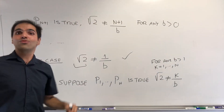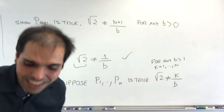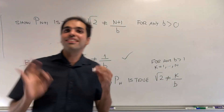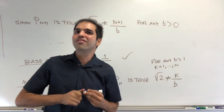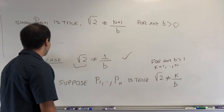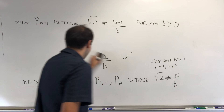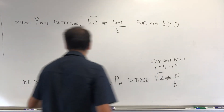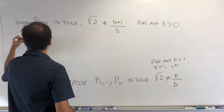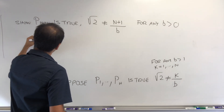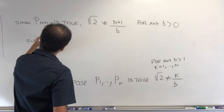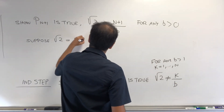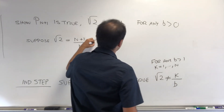We have to show this by contradiction, and you'll see it's pretty much the same as the classical proof that square root of two is irrational, but it's a very nice application of strong induction. So suppose square root of two equals n+1 over b for some positive b.